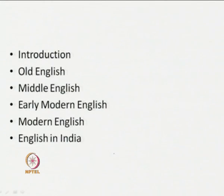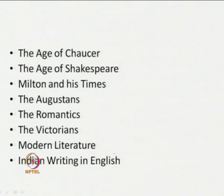In the second module we talk largely about language, particularly the history of the English language, which we divided into Old English, Middle English, Early Modern English, and ending with English in India. In the third module we talk about the different periods or ages in the history of English literature — the age of Chaucer, that of Milton, the Augustans, Victorian English, and ending again with Indian Writing in English.